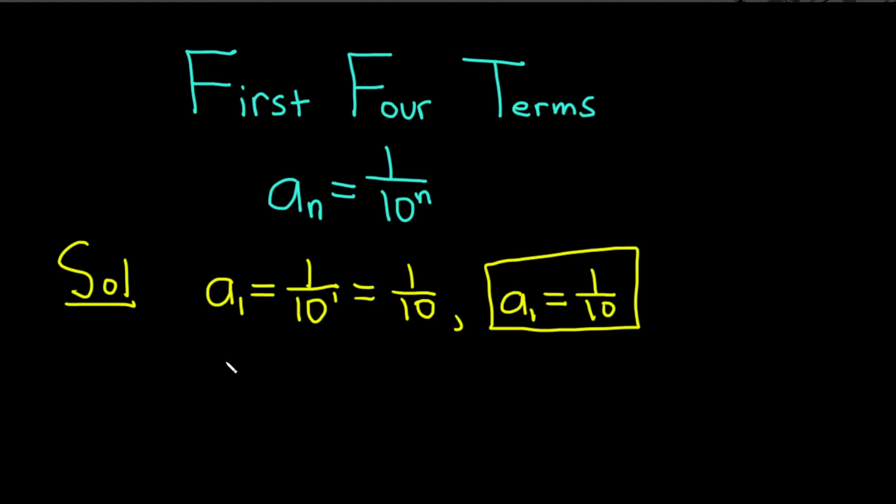Let's go ahead and find the second term. So a sub two, this is the second term of the sequence. This would be one over ten squared. And ten squared is a hundred, so this is one over one hundred. So the second term of the sequence is a sub two equals one over a hundred.